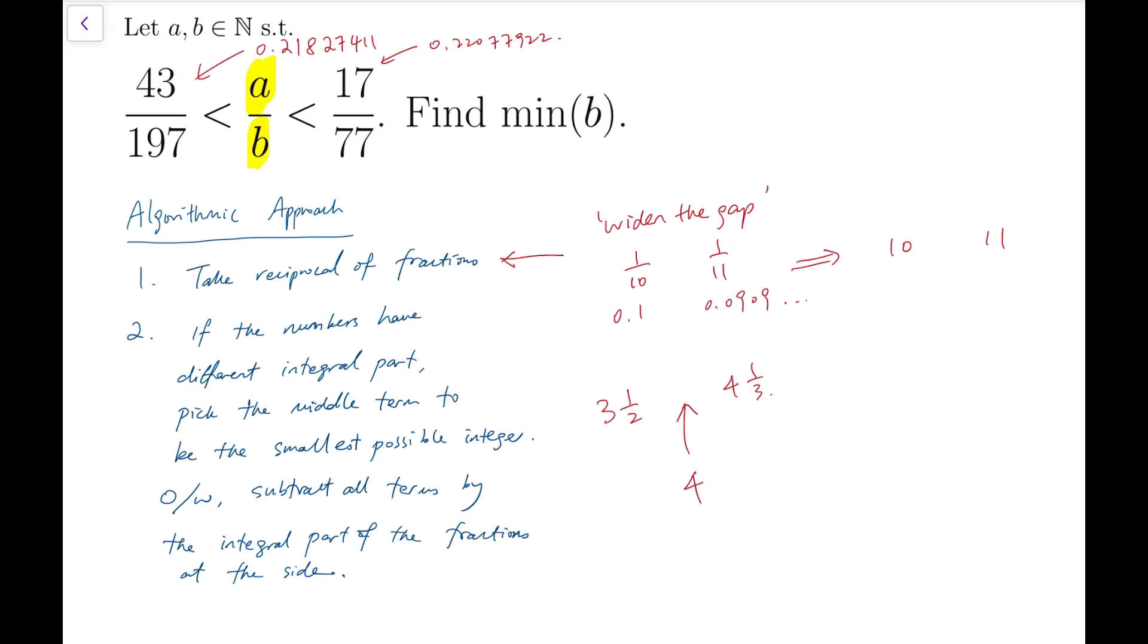Otherwise, if we cannot do that, which means the integral parts are the same, we subtract everything by that integer and return to step 1. So the gap can be further widened. Like if the two numbers are 4 and 1 fourth versus 4 and 1 half, then we subtract both fractions by 4. So it becomes 1 quarter and 1 half. Then we continue working.